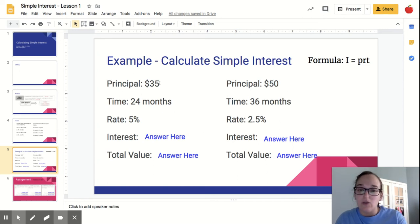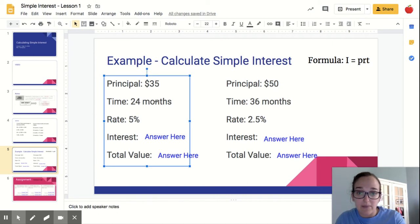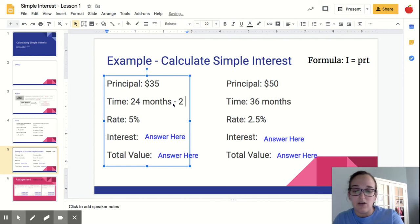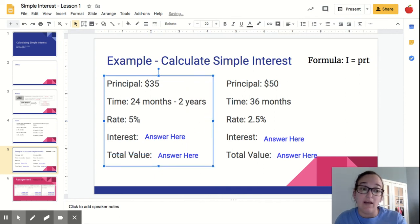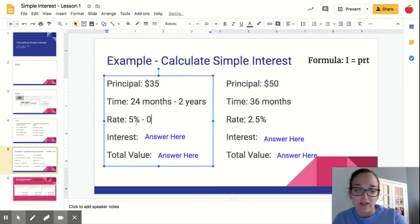Interest equals principal times the rate times time. So P-R-T. They're out of order here, but that's okay. So I'm going to do $35 times. I need the time to be in years. So change that to two years. And I need the rate to be in decimal format in order to multiply it. So 5% is 0.05. All you have to do is multiply all three of those. Principle times rate times time. I'm going to use a calculator, and you should too. 35 times 2 times 0.05.